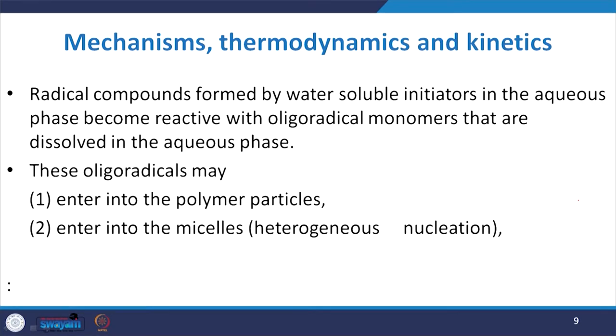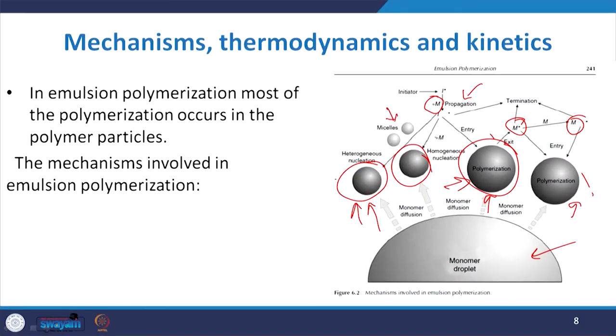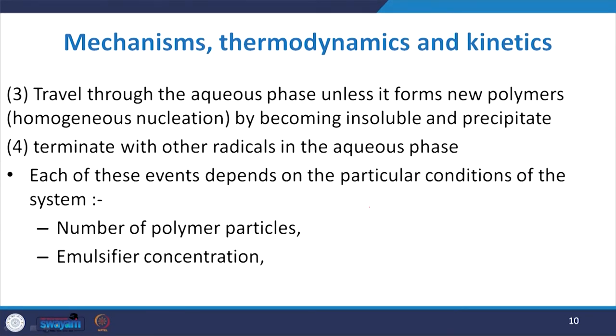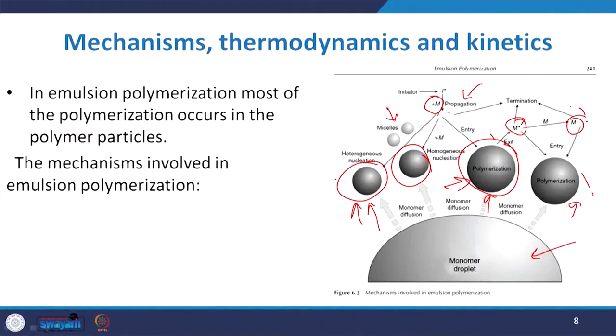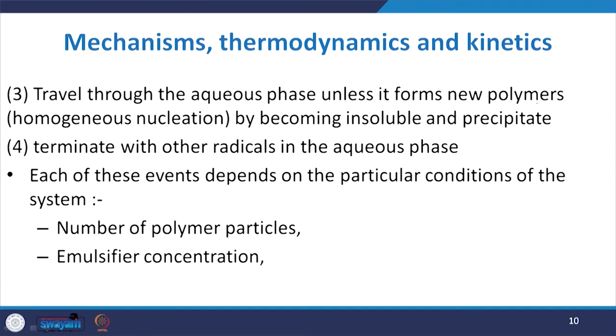Radical compounds are usually formed by water-soluble initiators in the aqueous phase. They become reactive oligoradicals with monomers dissolved in the aqueous phase. These oligoradicals may enter polymer particles or micelles — entering heterogeneous nucleation sites — or travel through the aqueous phase until a new polymer forms via homogeneous nucleation by becoming insoluble and precipitating. They may also terminate with other radicals in the aqueous phase, freeing room for other radicals.